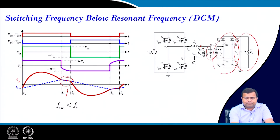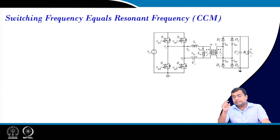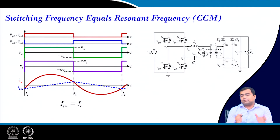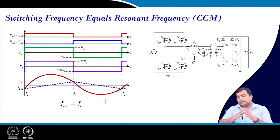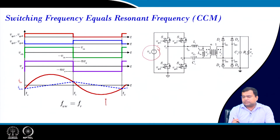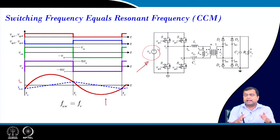Both below-resonant and above-resonant waveforms are distorted, not purely sinusoidal. If the switching frequency exactly equals the resonant frequency, the tank waveform approaches a pure sine wave, minimizing harmonic content and maximizing efficiency. Achieving this is challenging, but one approach is to adjust the DC link voltage — the PFC output — so that the resonant and switching frequencies can be equalized over a wider power range.